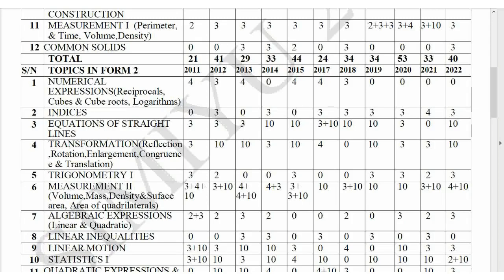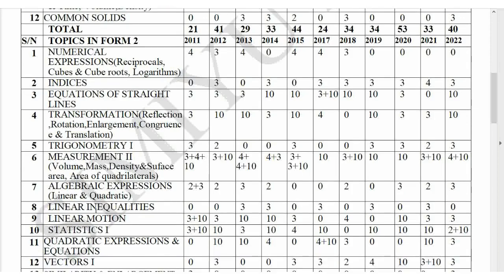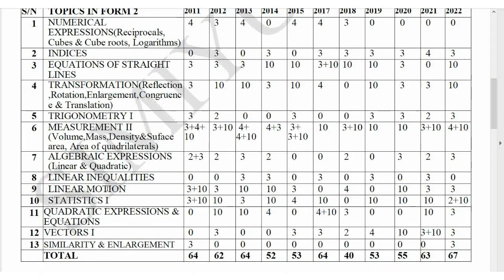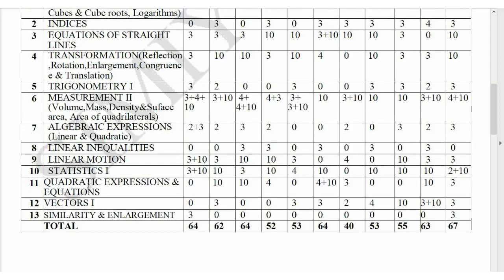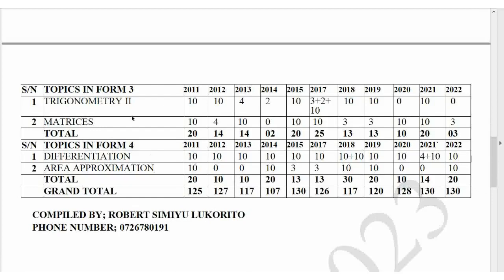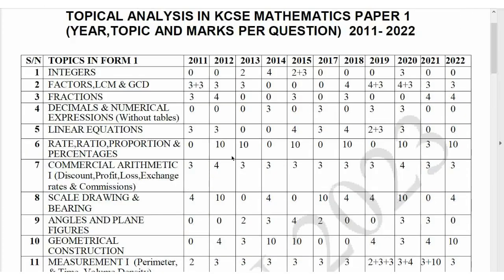Trigonometry 1, measurement, algebraic expression, linear equations, linear inequalities — these are Paper 1 topics. Statistics 1 from Form 2 and quadratic exploration are also in Paper 1. From Form 3, similarity is in Paper 1. Remember some topics appear in both Paper 1 and Paper 2, so you must expect them in both. Trigonometry 2 and matrices come in Paper 1, and from Form 4, differentiation and approximation are also found in Paper 1.